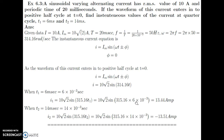For such calculations your calculator should be in radian mode. Note: by mistake 315 was typed — it should be 314.16. At T2 equal to 14 milliseconds, substituting 14 into 10 raise to minus 3 gives I2 equal to minus 13.51 ampere. That is the value of current at 14 milliseconds. One part remains: calculate the instantaneous value at the quarter cycle. Quarter cycle means one-fourth of 20 milliseconds, which is 5 milliseconds. Substitute T equal to 5 milliseconds to find that value.